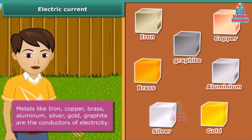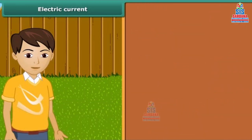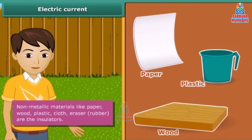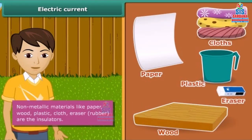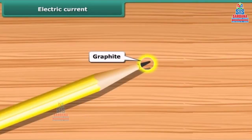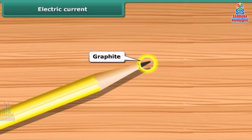Insulators are also known as non-conductors of electricity. Paper, wood, plastic, cloth, eraser, and rubber are insulators. Pencil lead is made of graphite, which is a form of carbon. It is a non-metal, but it is a conductor of electricity.